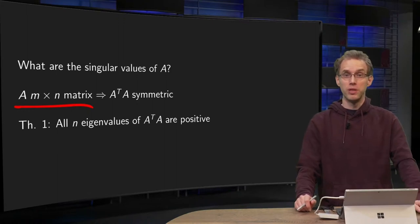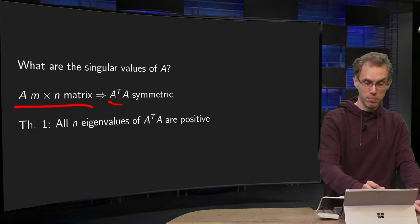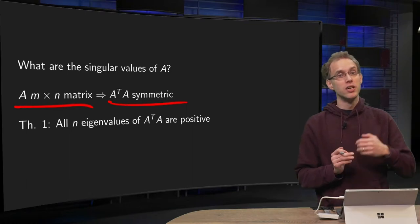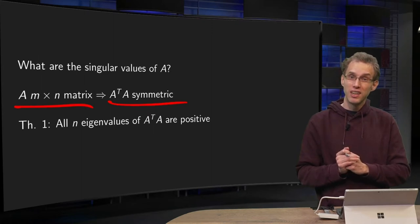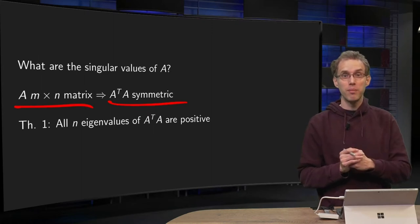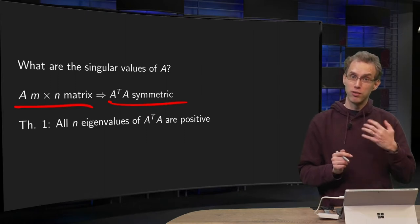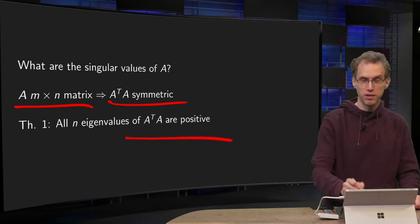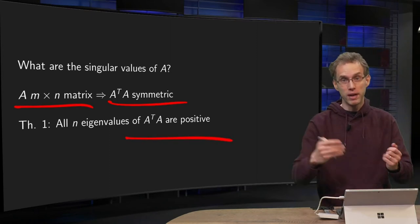You can compute A transpose times A, which will be a symmetric matrix — an N times N symmetric matrix. We have already learned that a symmetric matrix has only real eigenvalues, so our N times N matrix will have N real eigenvalues. Moreover, all those eigenvalues are non-negative — they can be zero or bigger than zero.